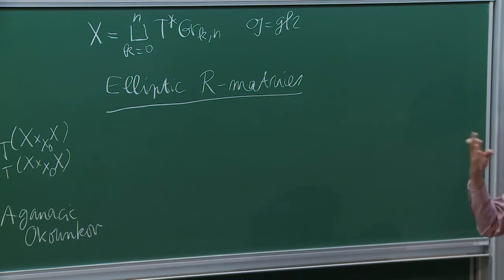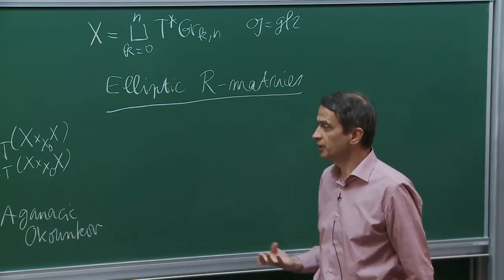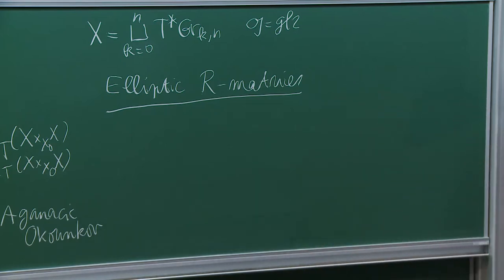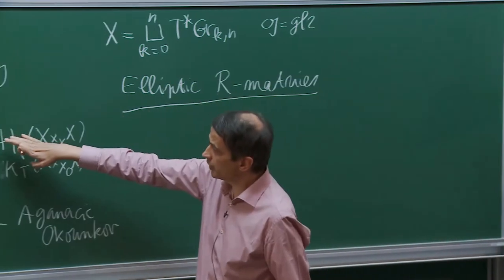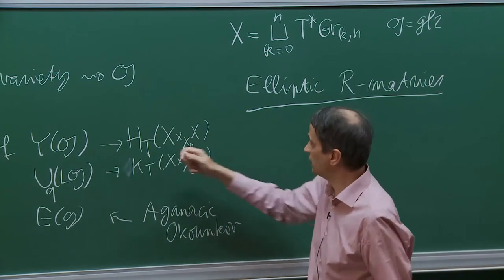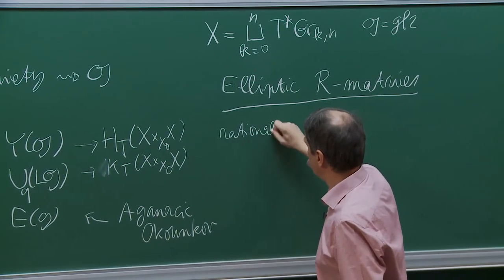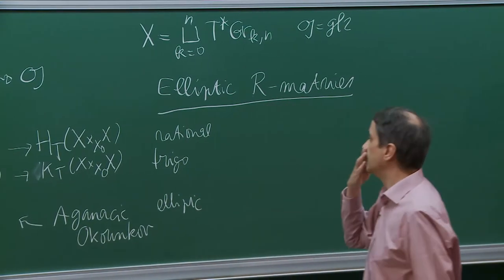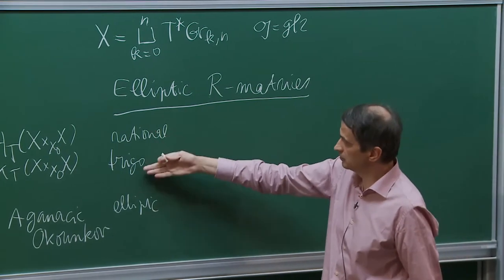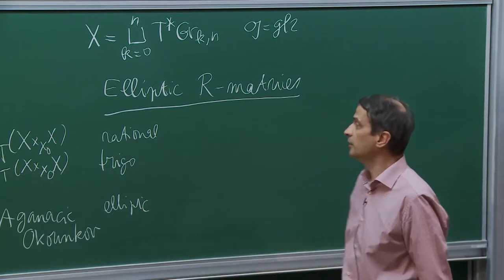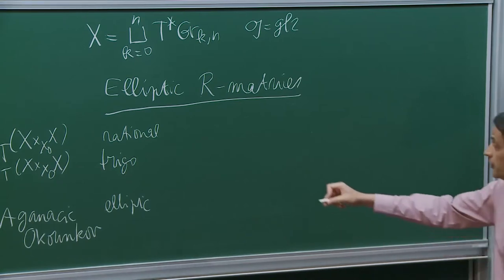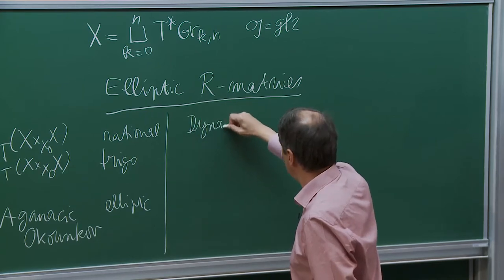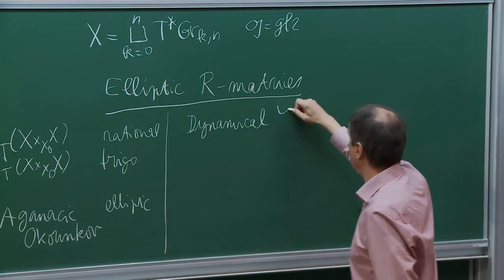These R-matrices are, by the most basic definition, solutions of the Yang-Baxter equation. There are such solutions in the rational case, the trigonometric case, and the elliptic case. In the elliptic case, you have not the usual Yang-Baxter equation but a dynamical version — the dynamical Yang-Baxter equation.